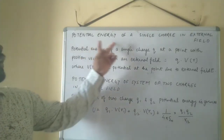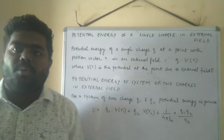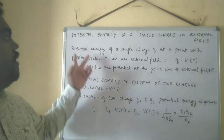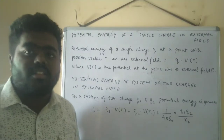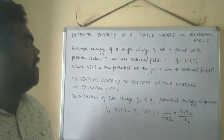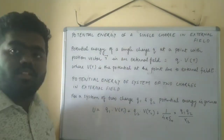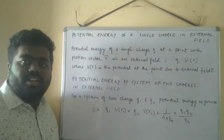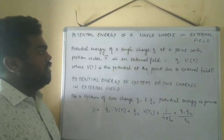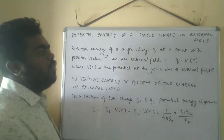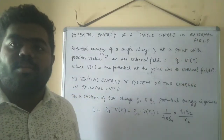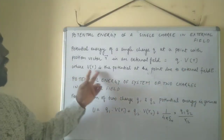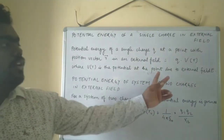The next topic is the potential energy of a single charge in an external field. We consider a charge Q at a point with position vector R — the position vector is the distance between the charge and the point being considered. In an external field E, the potential energy U is equal to Q multiplied by V(R), where V(R) is the potential at that point due to the external field E.